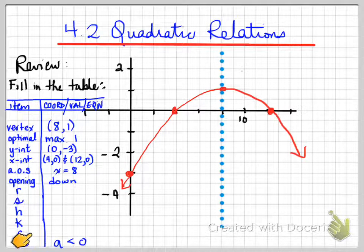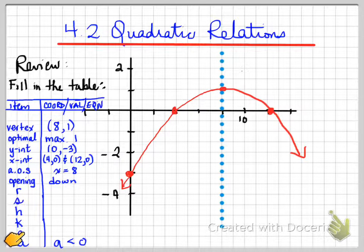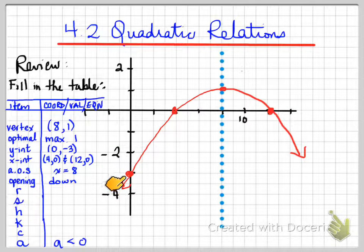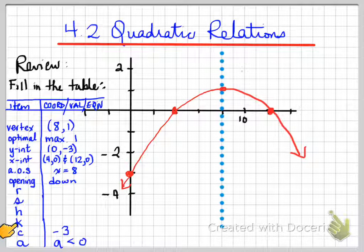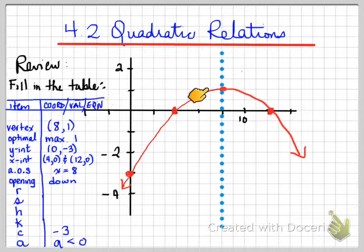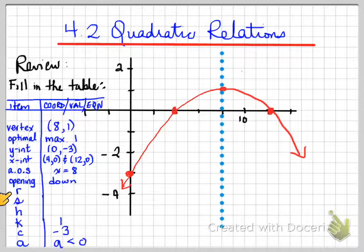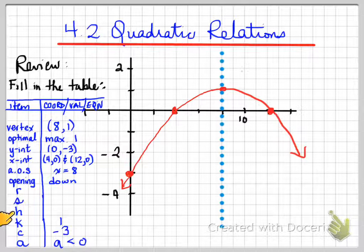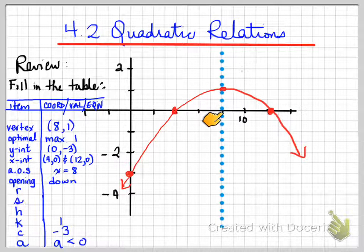Next: C. C stands for the y-intercept. The y value of the y-intercept is negative 3. Next, K: K was part of the vertex — it is the maximum or minimum value. In this case it's a maximum. That's the y value of the vertex, and that number is 1. H stood for the x value of the vertex; it also stood for where the axis of symmetry is. So H has the value 8.